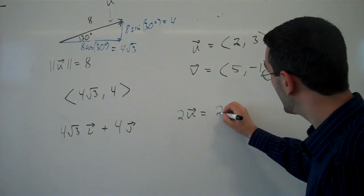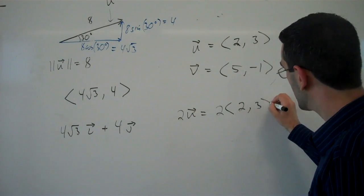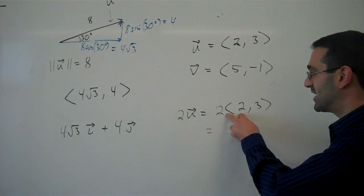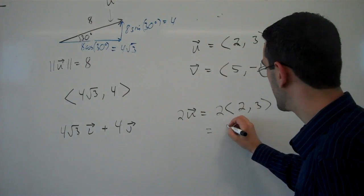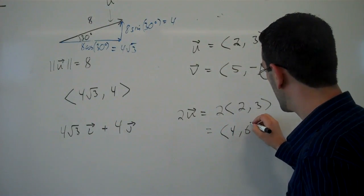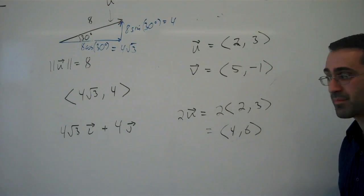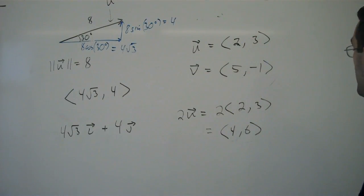If I wanted to find 2u for example, then I'm scaling this vector by 2. To scale the vector, I scale each component. So I double the horizontal component, I double the vertical component.